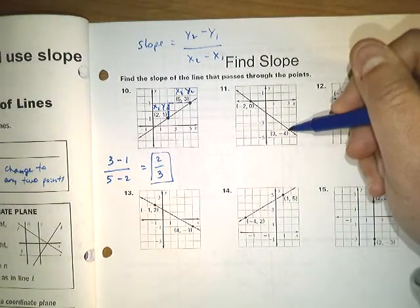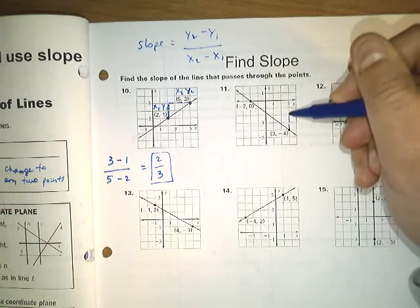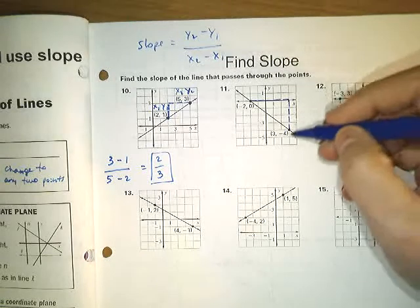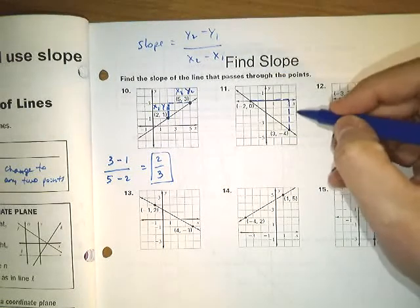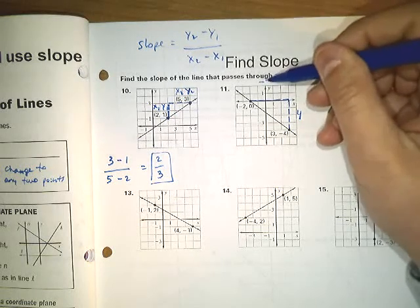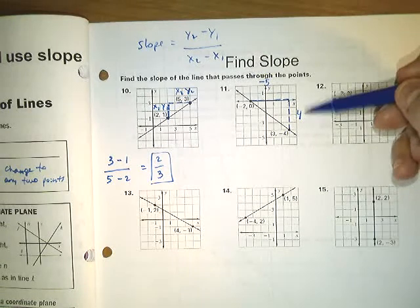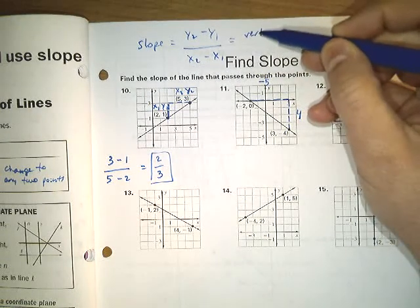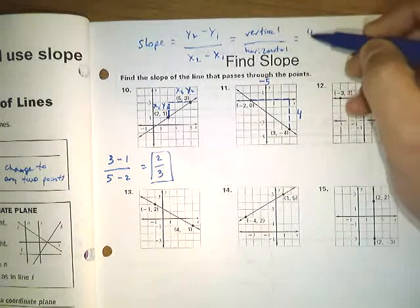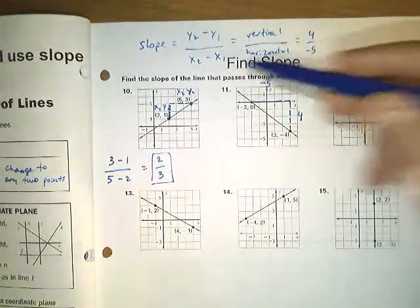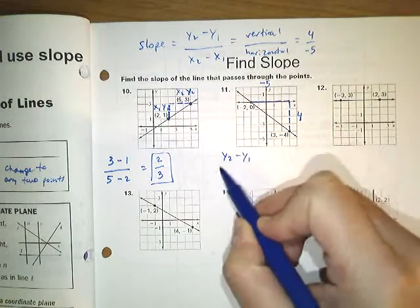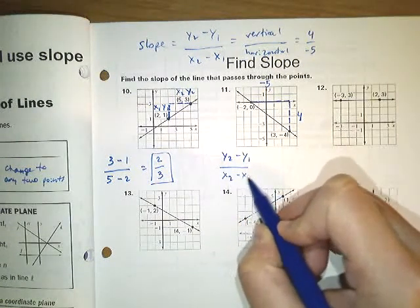For this one, you can see if we count the squares, it goes up 1, 2, 3, 4 units for every 1, 2, 3, 4, 5 units it goes to the left. Up represents the top number in our slope — it's a vertical movement, positive 4. Left is the bottom number; left is a negative movement of 5. So the leftward movement on this graph is negative 5 between these two points, giving vertical over horizontal as positive 4 over negative 5. You could also use the formula y sub 2 minus y sub 1 over x sub 2 minus x sub 1 and get the same answer.